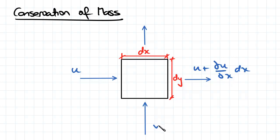The same is true for our velocity in the y direction. V is going to change to v plus the partial derivative of v with respect to y times dy. This is how our velocity changes in the x direction and in the y direction.